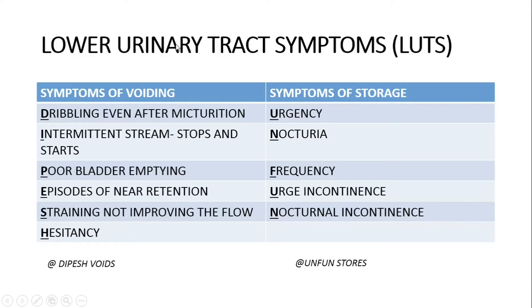BPH will lead to bladder outlet obstruction and will result in lower urinary tract symptoms, also known as LUTS. The symptoms of LUTS can be classified as voiding symptoms and storage symptoms. Symptoms of voiding include dribbling after micturition, intermittent stream that stops and starts, poor bladder emptying, episodes of near retention, straining not improving the flow, and hesitancy.